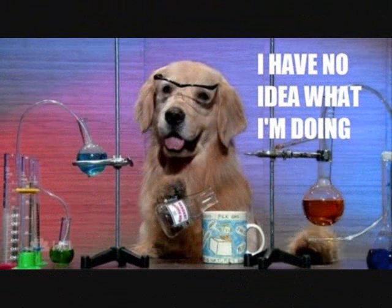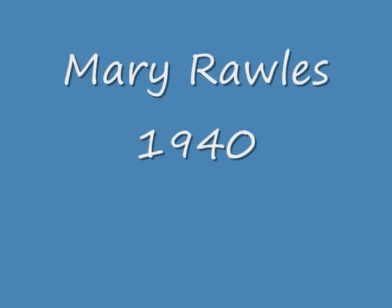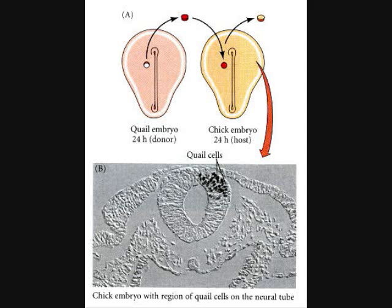Another experiment? Yeah, you've got to figure this stuff out somehow. It's pretty straightforward, actually. The Rawls' experiment sums it up nicely. The basic idea behind the experiment was to inject chick embryos with the neural crest cells from quails.